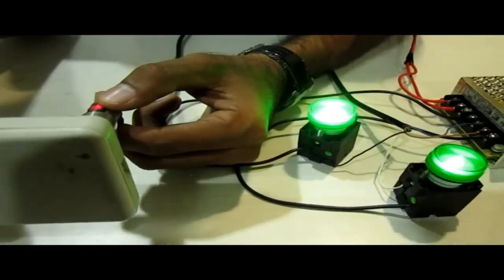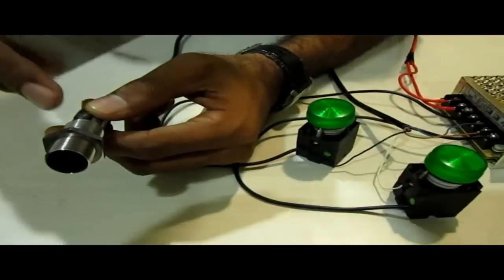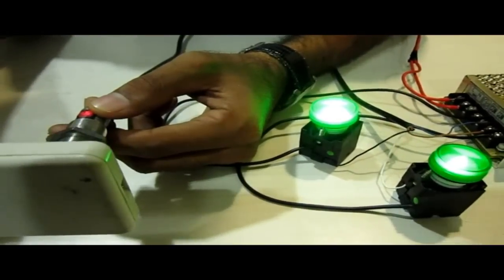So when I place any object in front of this the dielectric medium changes which is indicated by the internal circuitry of the sensor and we are getting the signal in the output.